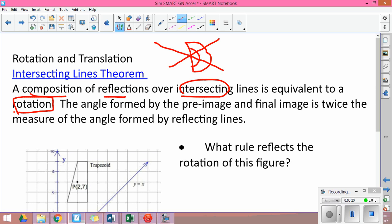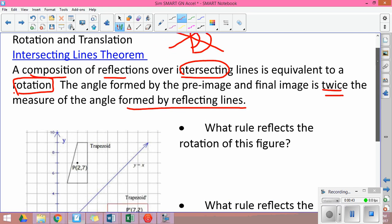You have a typo in your notes, so the angle formed by the preimage and the final image is twice the angle formed by the reflecting lines. Go ahead and change your notes from the preimage and image to the reflecting lines, and you'll see that in a second.